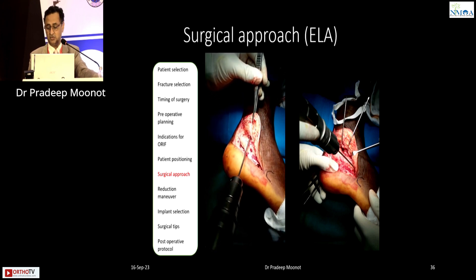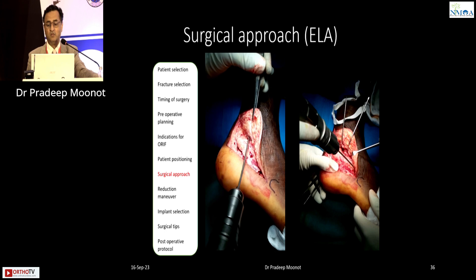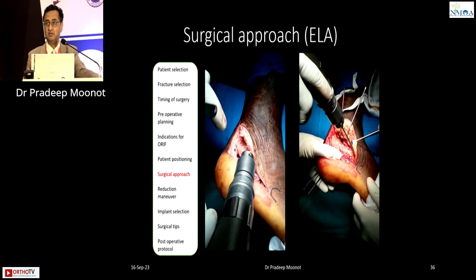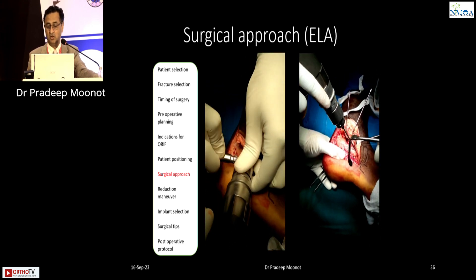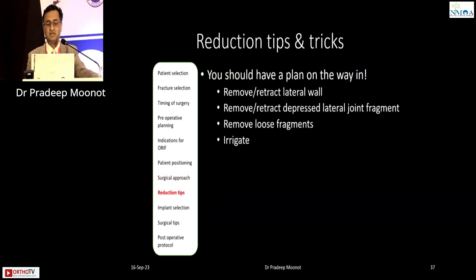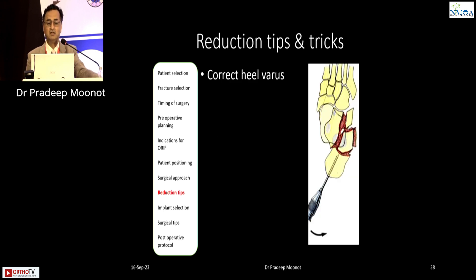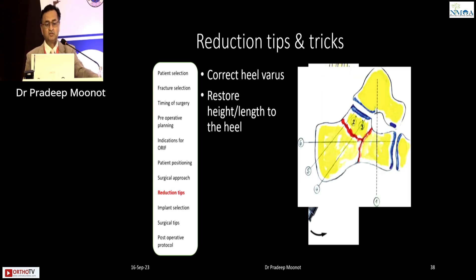Place three K-wires: one in the fibula, one in the talar body, and a third wire anteriorly — either in the anterior process of the calcaneum if unfractured, or in the cuboid if the anterior process needs fixation. Always have a plan going in and a plan coming out. Retract the lateral wall, elevate the fragments, remove loose pieces, irrigate to prevent infection, and correct all deformities — including heel varus — restoring height, length, and the subtalar joint.